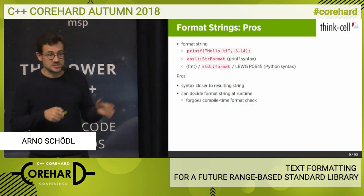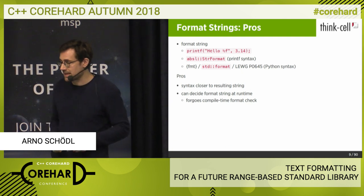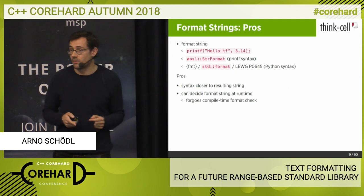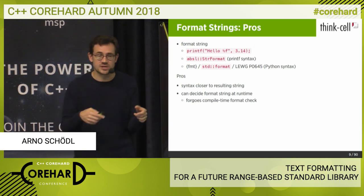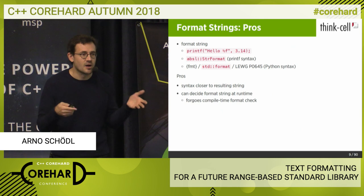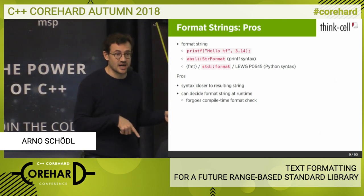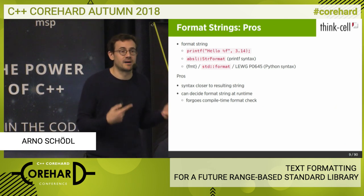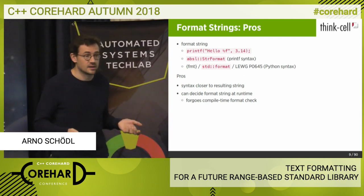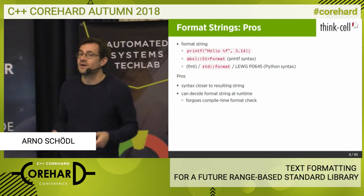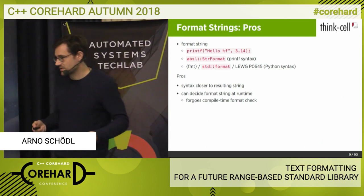What are the advantages? Let's go through both options — format strings and just C++ — and see the pros and cons. Why would we use format strings? One good reason is that the syntax is closer to the string you finally get. You have placeholders in the string, so you can kind of see what you're going to get at the very end. A disadvantage that format strings used to have is going away: it used to be impossible to check at compile time if the format string is valid, but with constexpr support it's now actually possible. Of course, you have the option to determine the string at runtime, in which case you can't do compile-time checks — that's okay.